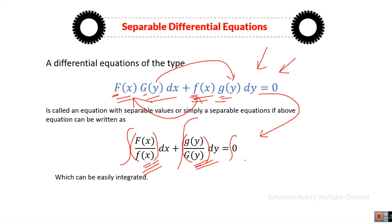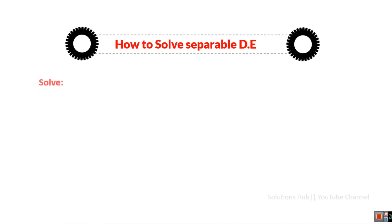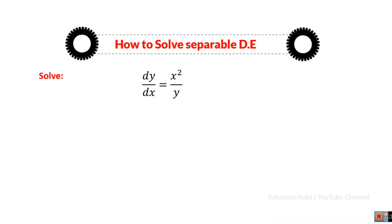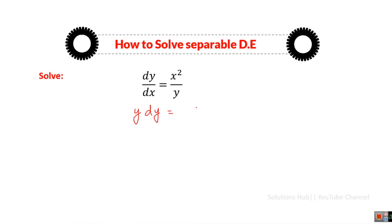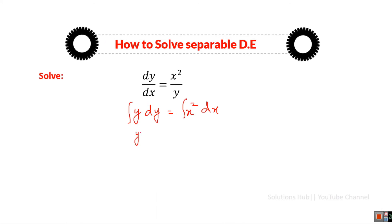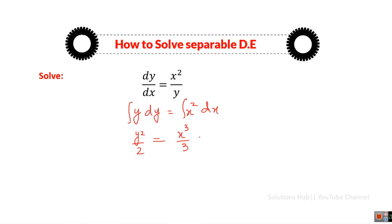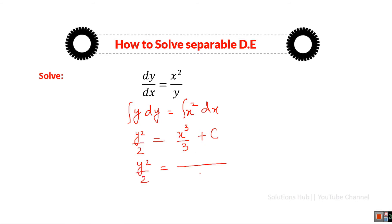Now let's start with some examples. We have our first differential equation. We first identify that it is indeed separable — by cross multiplying, we can write it in the form Y dY on the left-hand side and X² dX on the right-hand side. Now we just integrate both sides. Integrating Y gives Y²/2, and integrating X² gives X³/3, and we add a constant C.